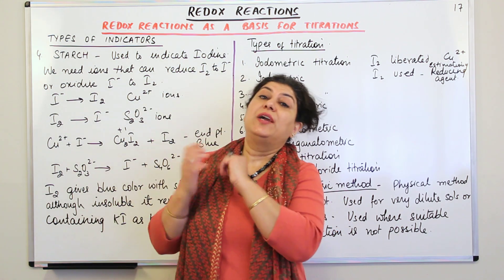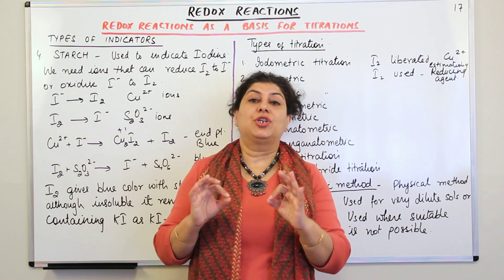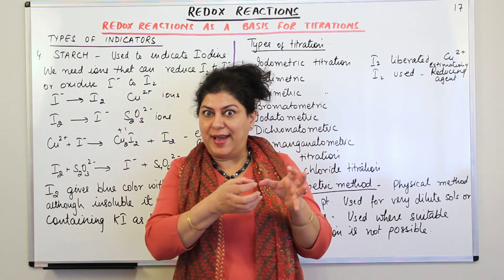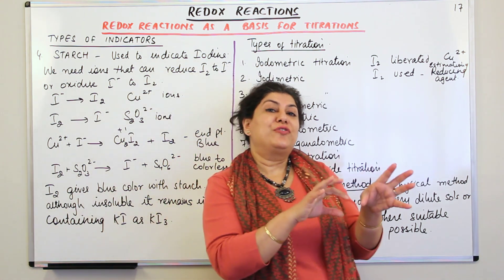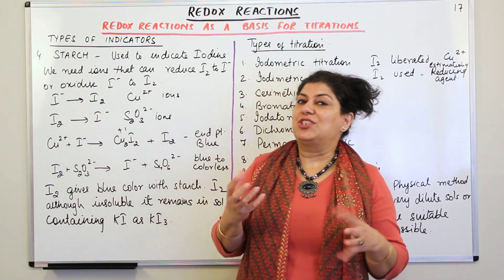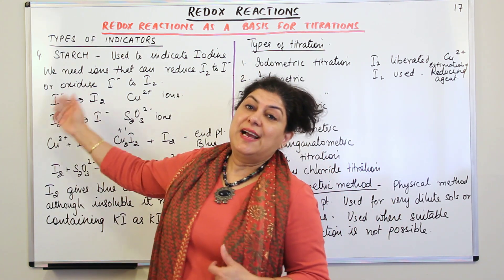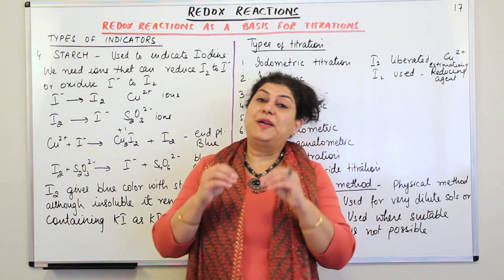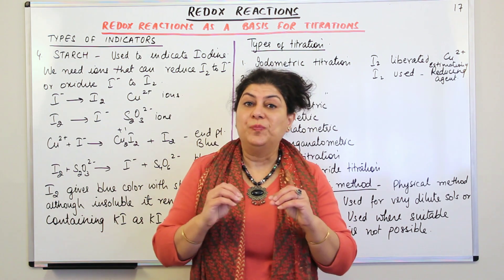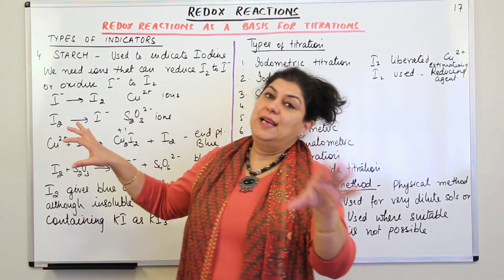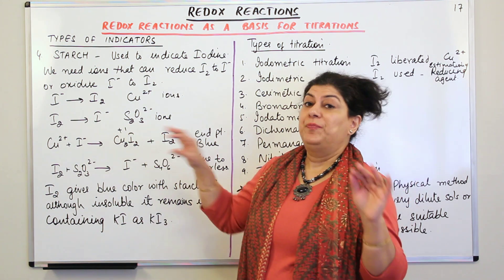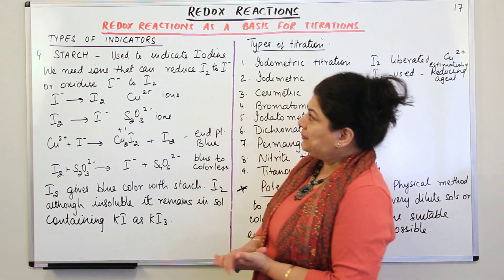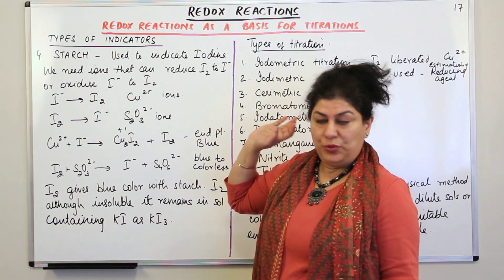Starch indicates iodine. Iodine in the presence of starch has a blue color. We use this fact that iodine in the presence of starch turns it blue, and any reaction which involves iodine is one where we can use starch as an indicator. Iodine must be present in the oxidized form, that is as I2, for starch to indicate it. If it is present as the iodide ion, it does not show the color.